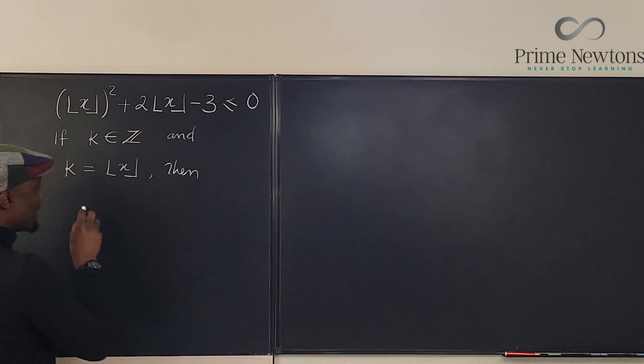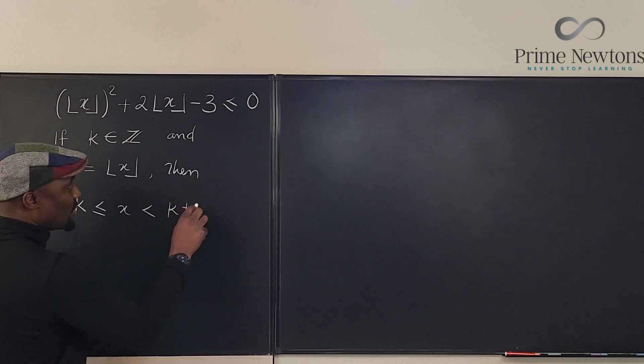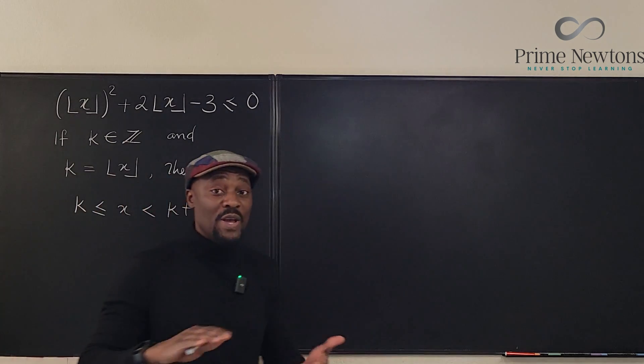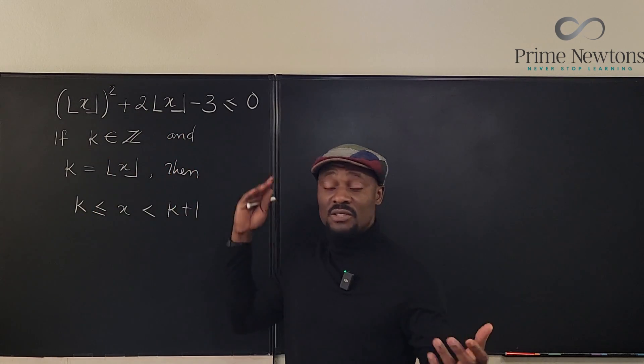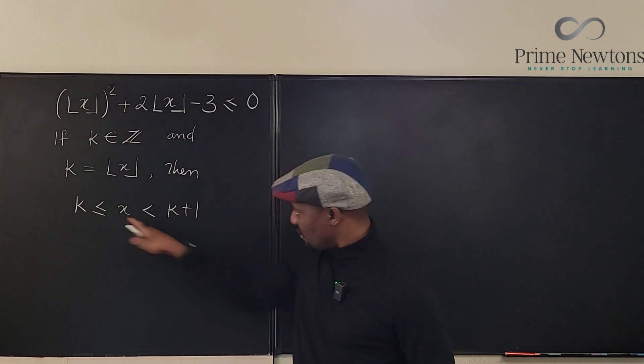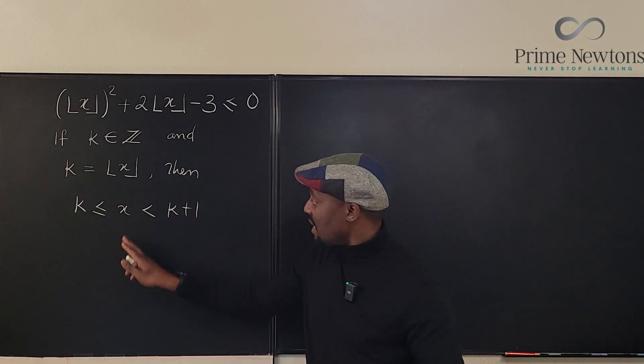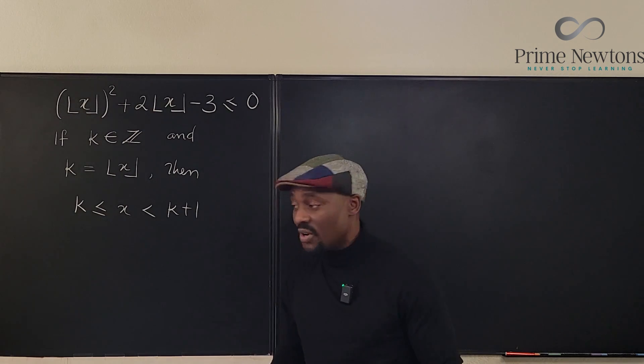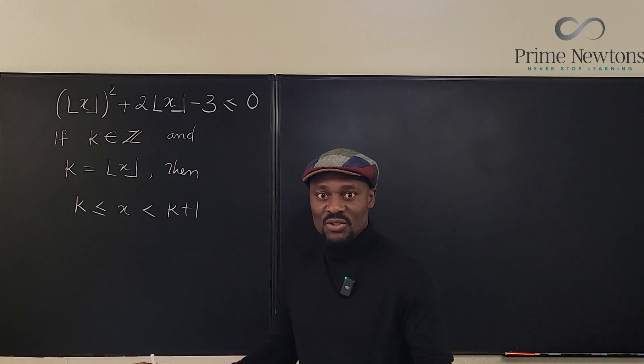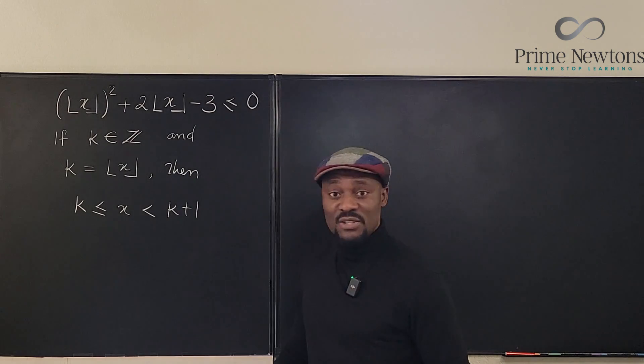Then K is less than or equal to X, and X is less than K plus one. This is what I always start with every time we deal with the floor function and any kind of equation. This will always be the first thing, and know that K is an integer. Now if X is an integer, then X will be equal to K. If X is not an integer, then X will be less than K. That's just the only condition that is left. Otherwise, I think we're ready to solve it.